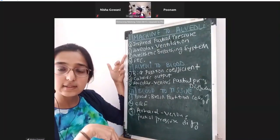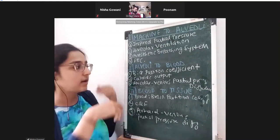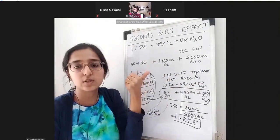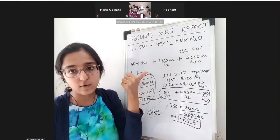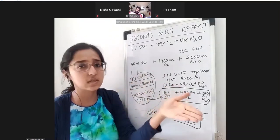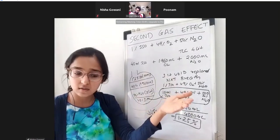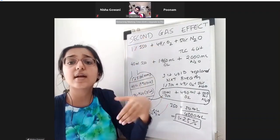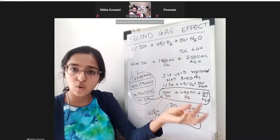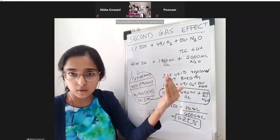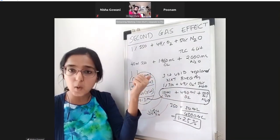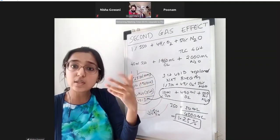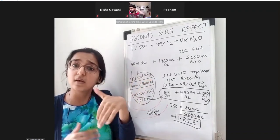Next factor: alveolar ventilation. If you increase alveolar ventilation — minute ventilation minus dead space — you increase delivery of nitrous and isoflurane to the alveolus, so induction is faster. Hyperventilating briefly at the start of a case will help achieve depth of anesthesia more quickly.